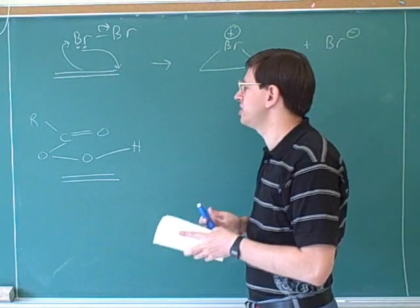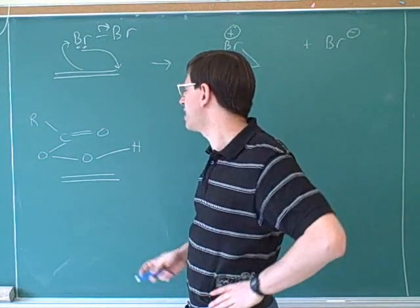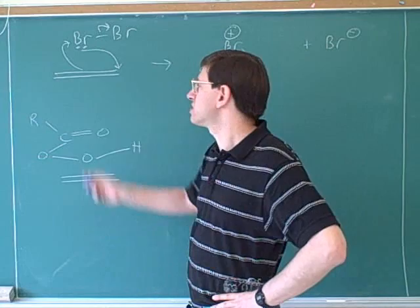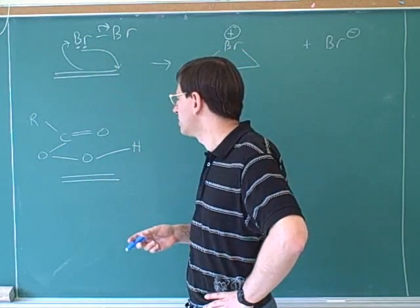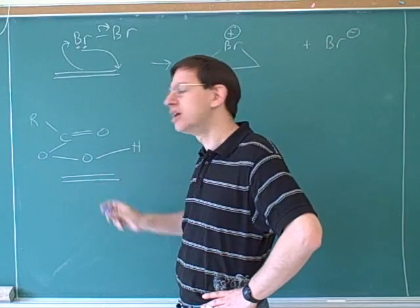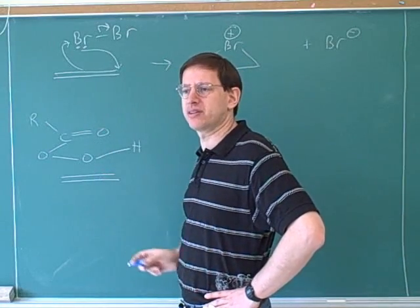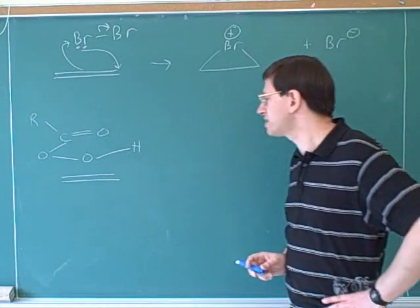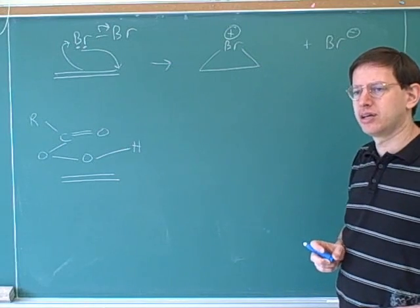Now we want to, by analogy, show the mechanism between a peracid and an alkene. This was just a review of the reaction you saw last term. Now we should see what the mechanism is when this peracid attacks the alkene. By the way, what's going to be the product of this? What's going to be the product when the peracid attacks the alkene?